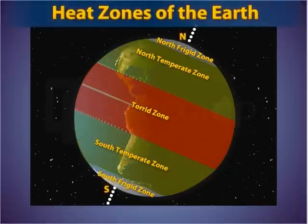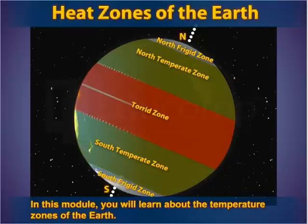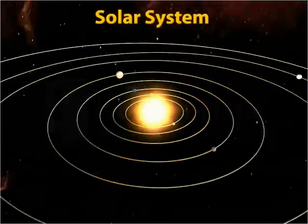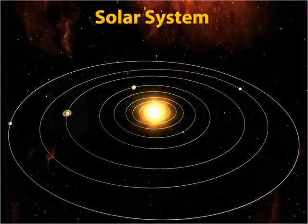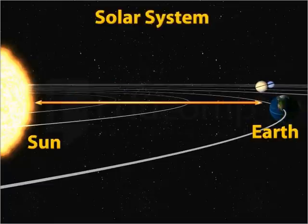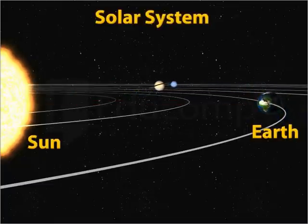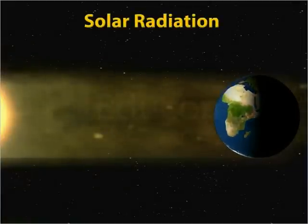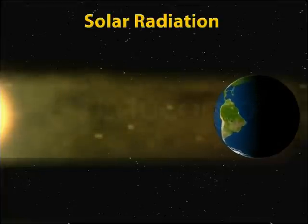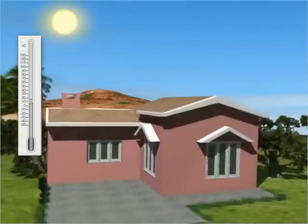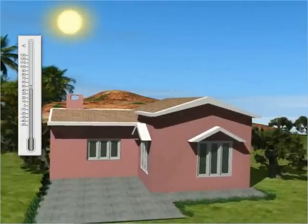Heat Zones of the Earth. In this module, you will learn about the temperature zones of the Earth. The sun, which is at the center of the solar system, is the source of heat for all the planets. Since the Earth is placed at a distance of 150 million miles away from the sun, it intercepts only a very small part of the solar radiation. The amount of solar radiation intercepted by the surface of the Earth is termed as the incoming solar radiation, or in short, insolation. The amount of heat energy from the sun received by a place helps in deciding the temperature of that place.